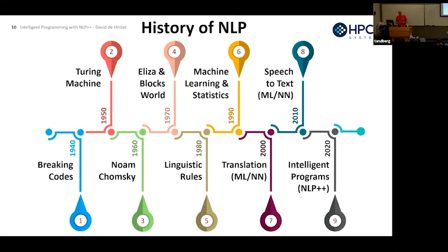Noam Chomsky in 1960 came along and basically made modern linguistics and computational linguistics what it is today. Eliza and SHRDLU from MIT — Terry Winograd — is really what I consider to be the first intelligent program. In the 1980s, many people including us tried to use the linguistic rules by Chomsky using computers. We had languages like Prolog, where you didn't have to write algorithms — you just put in grammars — but we got into combinatoric problems.